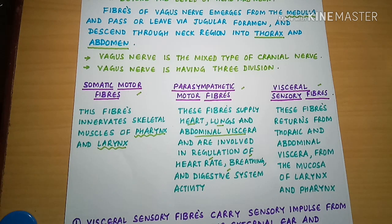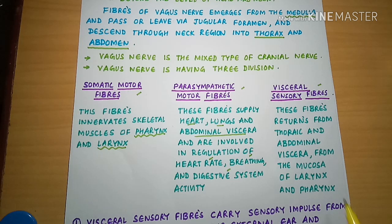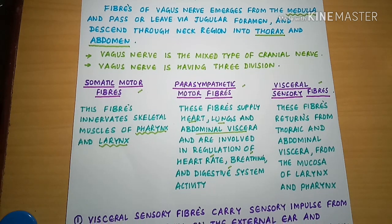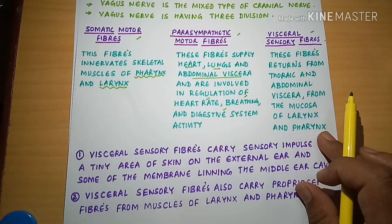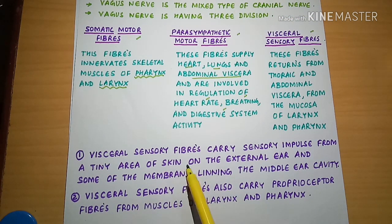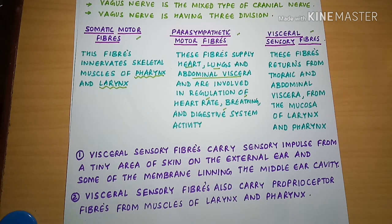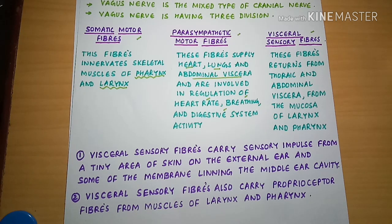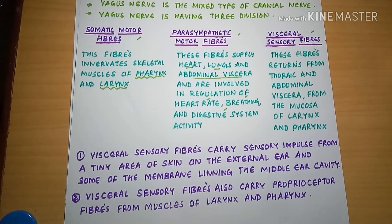The Visceral Sensory Fibre Division of the Vagus Nerve carries fibres returning from the thoracic and abdominal viscera and from the mucosa of larynx and pharynx. It also carries sensory impulses from tiny areas of skin of the external ear and from the membrane lining of the middle ear cavity.